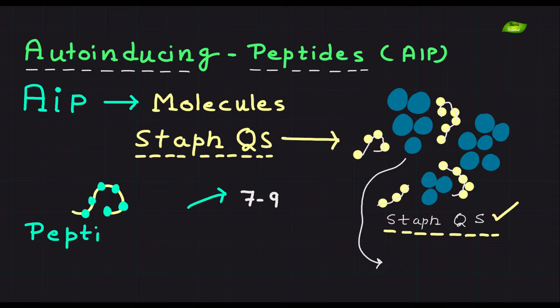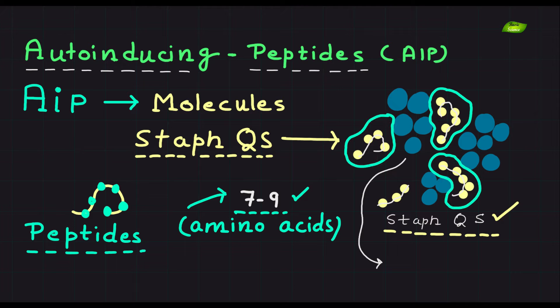These small peptides, typically consisting of 7-9 amino acids, are synthesized and released by bacterial cells into the extracellular environment.